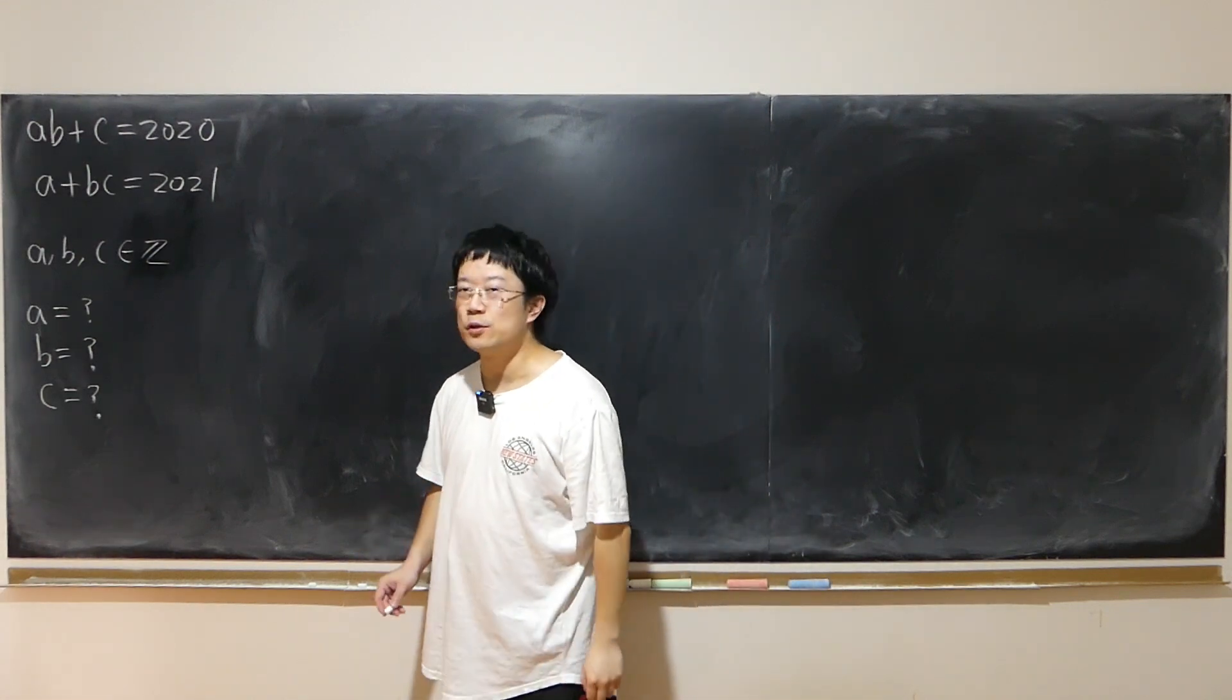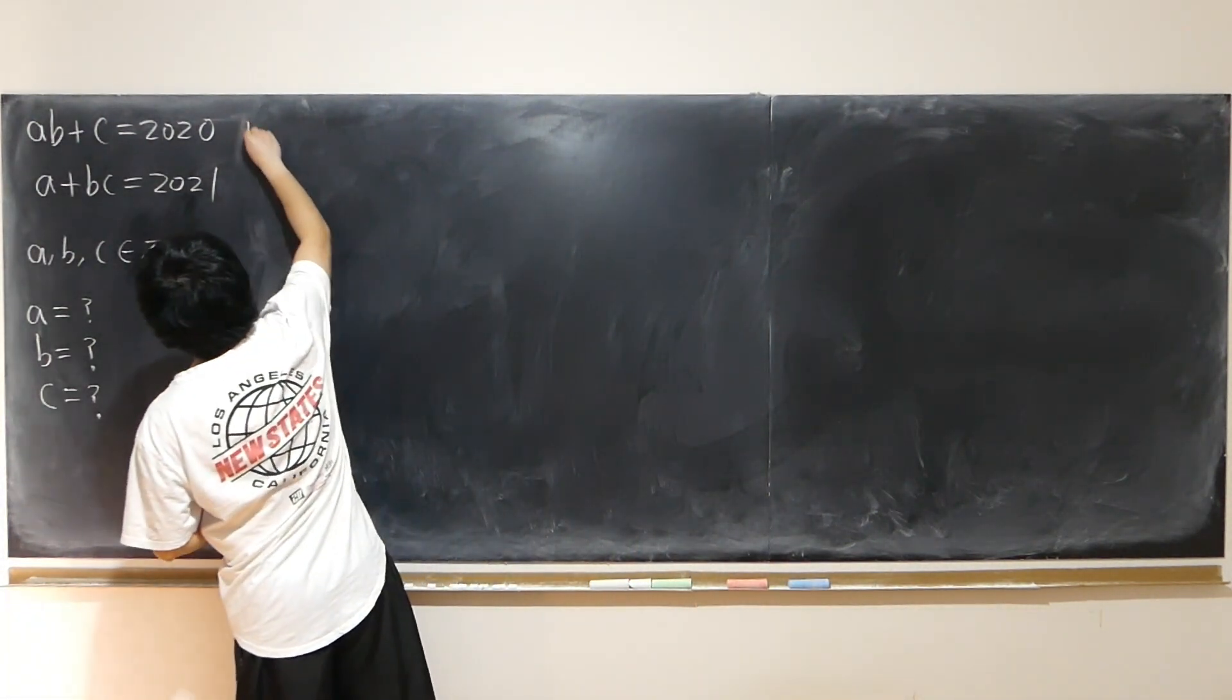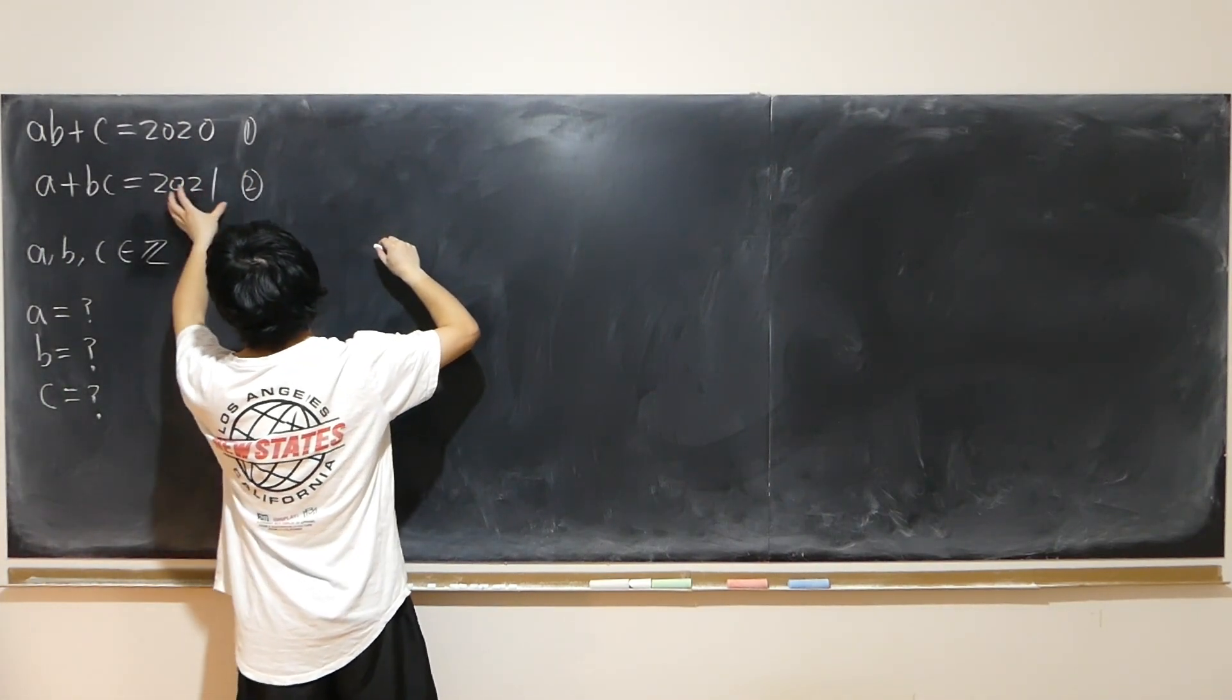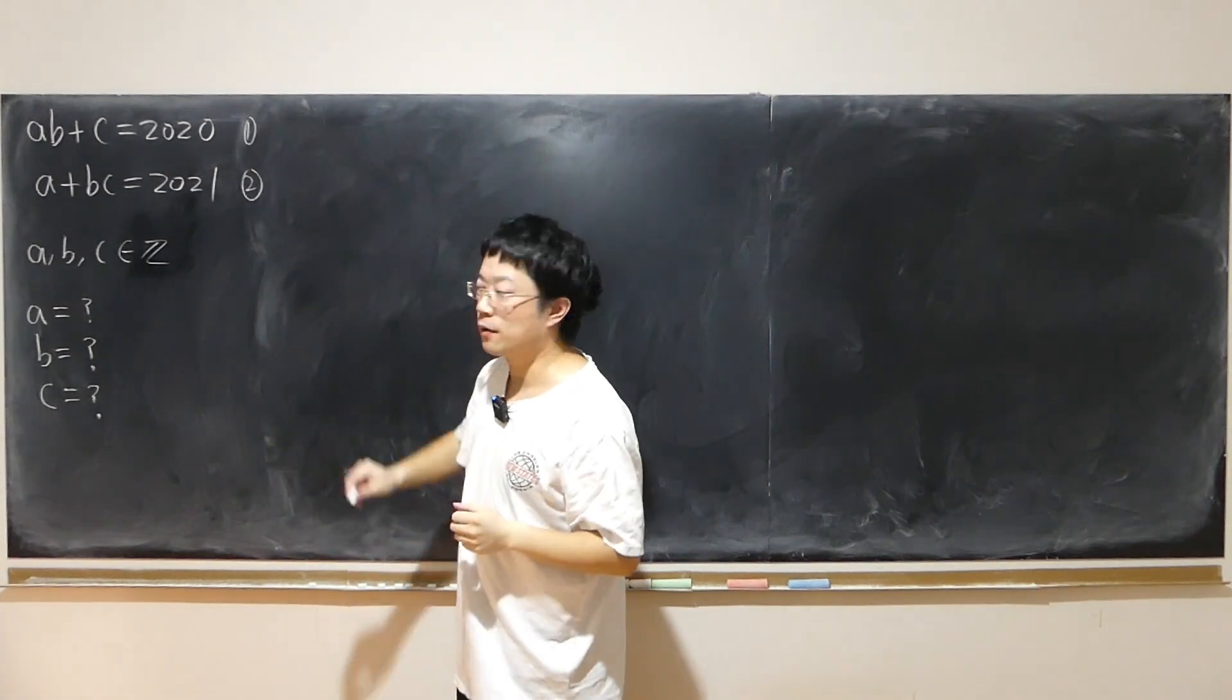Find the integer solutions given those two equations. So first thing I notice is that their difference is 1. So hopefully I can subtract from one to the other, and there could be some common factor.